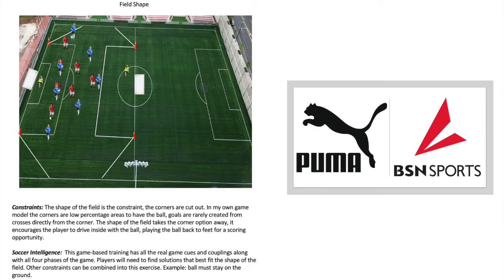Here you can see the corners are not allowed — players can't go in the corners, so the field is cut in on angles. The corners are a really low-percentage area, so in our game model we cut them out. It forces players to drive the end line and play the ball back on an angle on the ground for a finish. If a player does get into a corner, you can allow two touches and require them to play the ball backwards. A simple constraint that reinforces the game model.